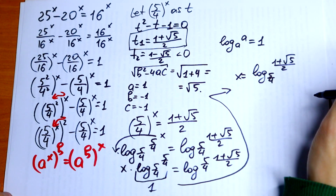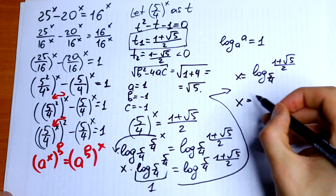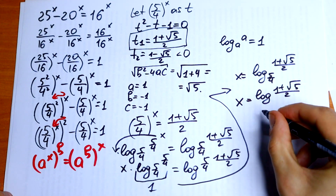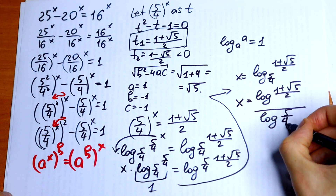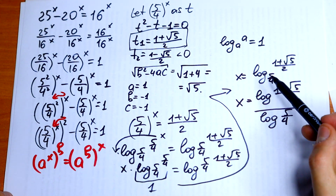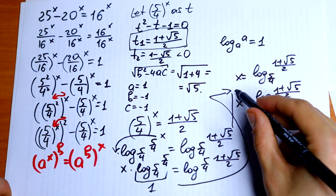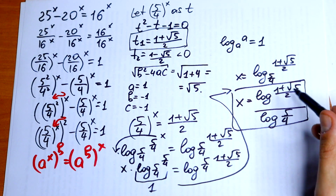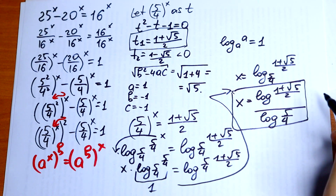We can simplify this a little further using a log property, breaking the base. So x equals log((1 + √5)/2) divided by log(5/4). This is our final answer, which you can calculate on your calculator. This is our solution to this interesting exponential equation.